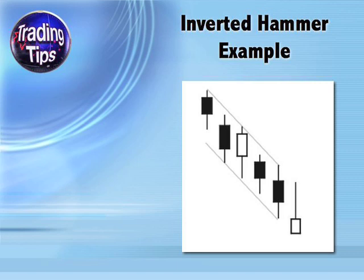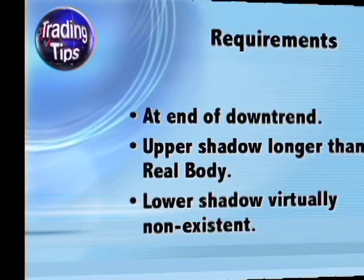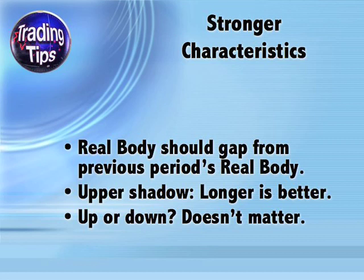Let's look at what makes an inverted hammer. First, it must be at the end of a downtrend. Secondly, the upper shadow should be longer than the real body, and the lower shadow should be virtually nonexistent — meaning the lower of the opening and closing prices should be very close to the stock's low for that period.